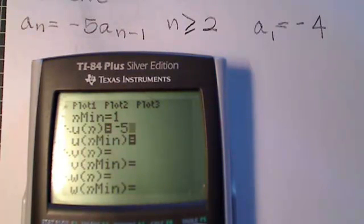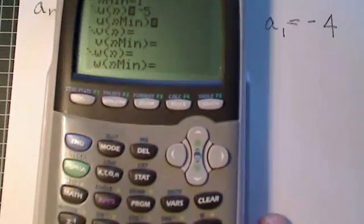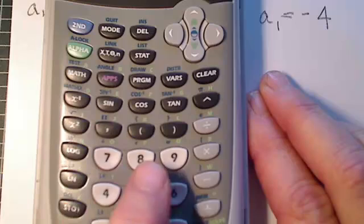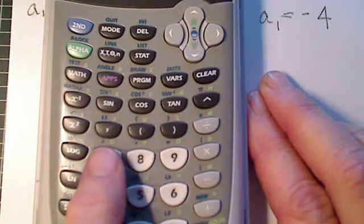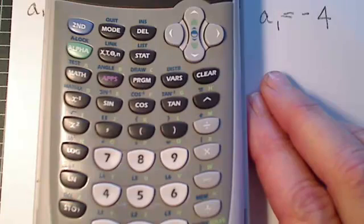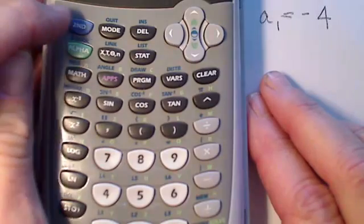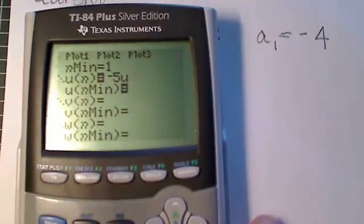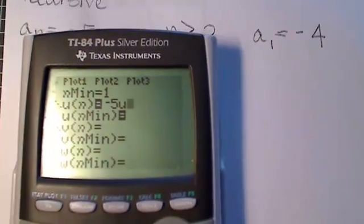So negative 5. Now to get that u, if you look on your keyboard, you see that above the 7, 8, and 9 are blue lowercase u, v, and w. Those are reserved as functions for sequences. So if I push second u, it automatically puts in that u function.